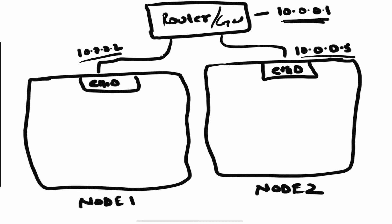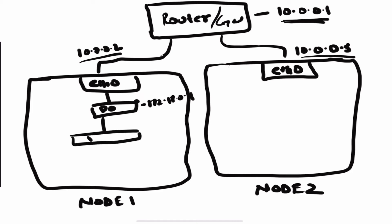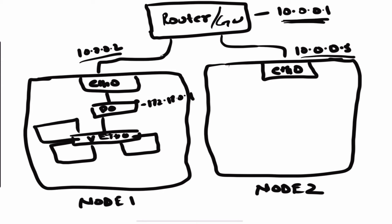Now putting the constructs we've discussed over here — you would have docker0 (call it d0) with an IP of 172.17.0.1, then a virtual interface veth0, with container one, container two, and the pause container. This veth0 gets an IP from the same range — suppose it gets 172.17.0.2.